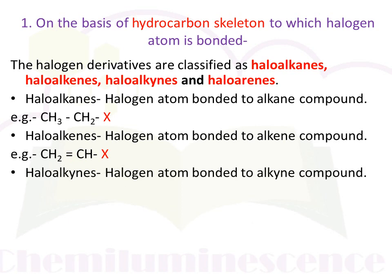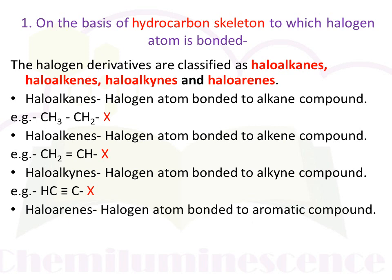Haloalkynes: alkyne means a compound in which a carbon-carbon triple bond is present. If the halogen atom is bonded to a triply bonded carbon, it is called a haloalkyne. Here the halogen is bonded to a triply bonded carbon. Haloarenes: the word 'arene' is used for aromatic compounds. When the halogen atom is bonded to an aromatic compound like benzene, it is called a haloarene. Here you can see the halogen atom is bonded to a benzene ring.